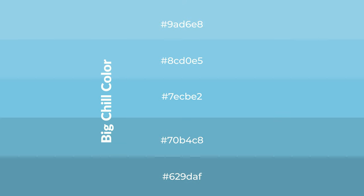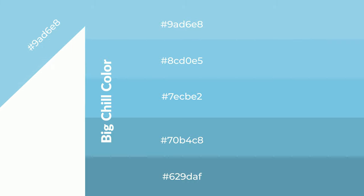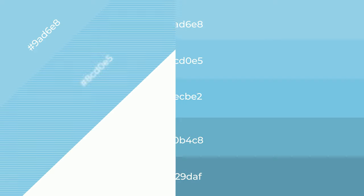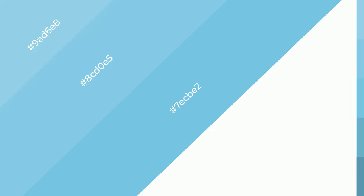To generate shades of a color, we add black to the color, and it is used in patterns. 3D effects, layers and shades create depth and drama.